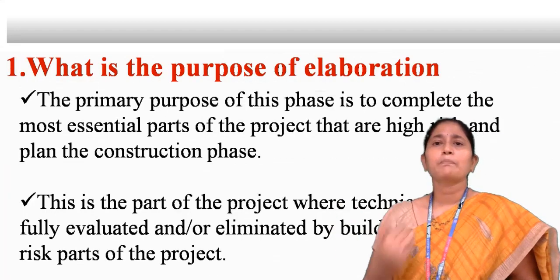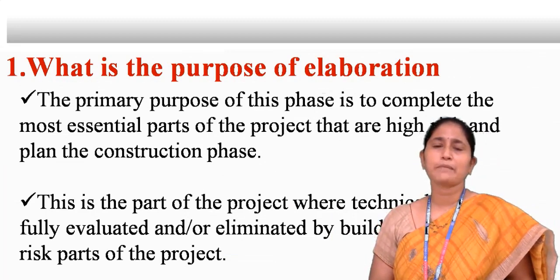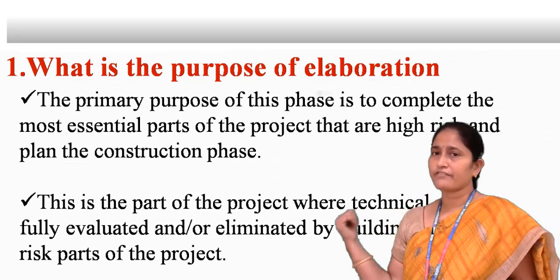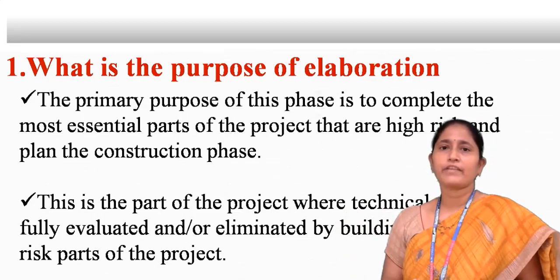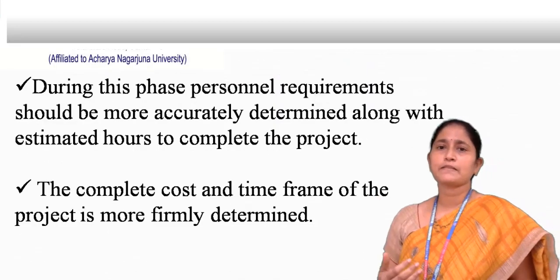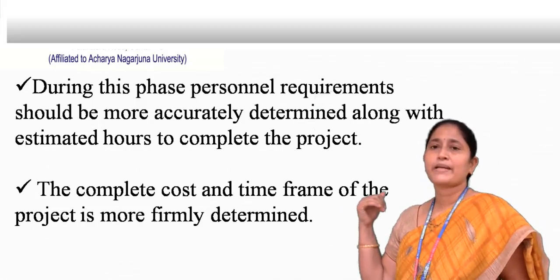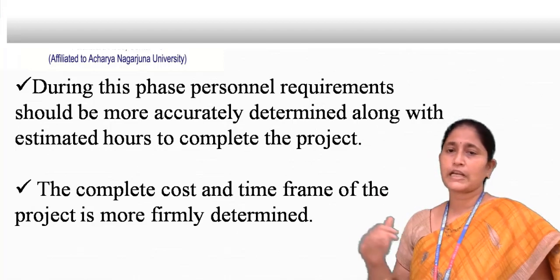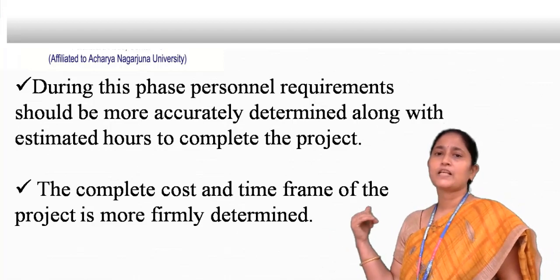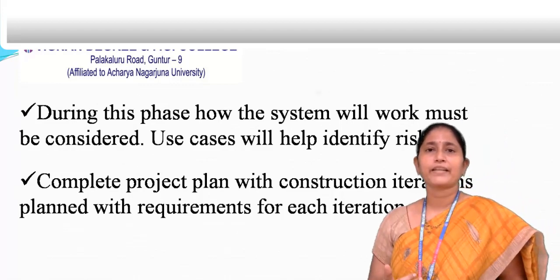The primary purpose of the elaboration phase is to complete the most essential parts of the project that are high risk and to plan the construction phase. This is the part of the project where technical risk is fully evaluated by building the highest risk elements. During this phase, personal requirements should be more accurately determined along with estimated hours to complete the project, and the complete cost and time frame of the project is more firmly determined. How the system will work must be considered; use cases will help to identify the risk.